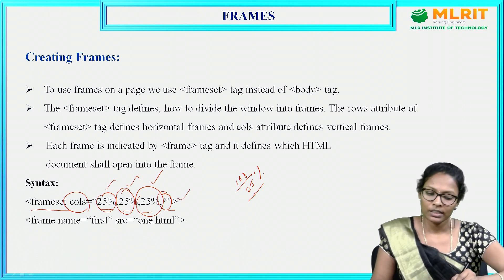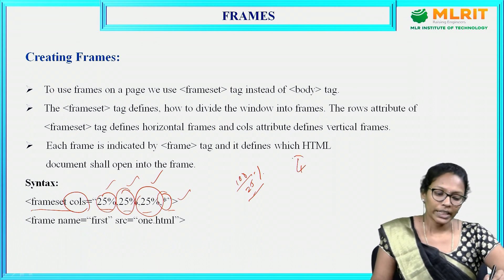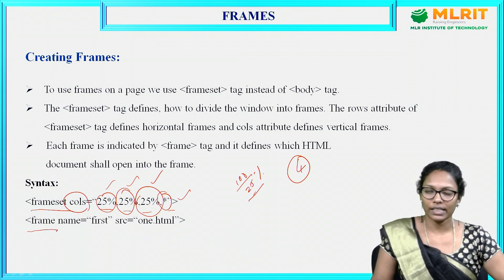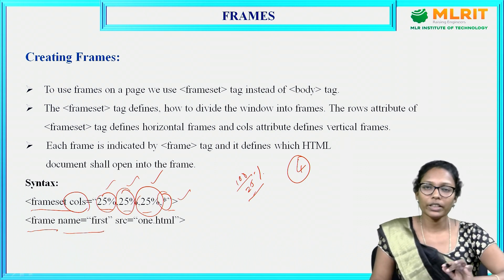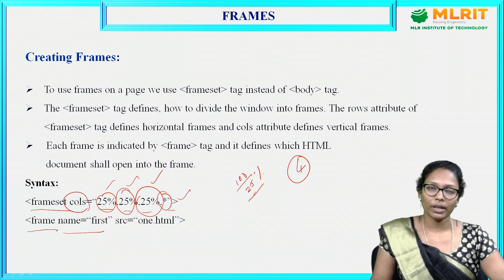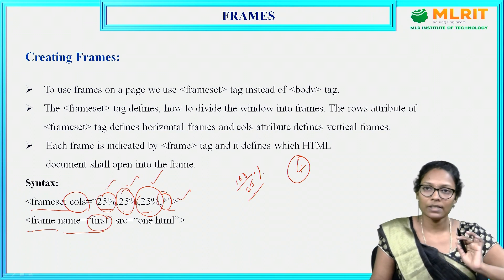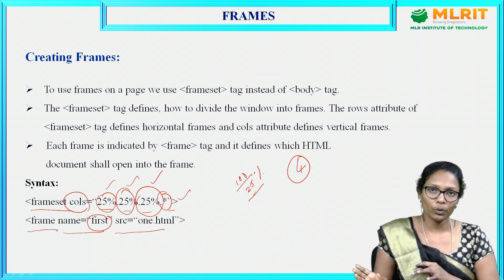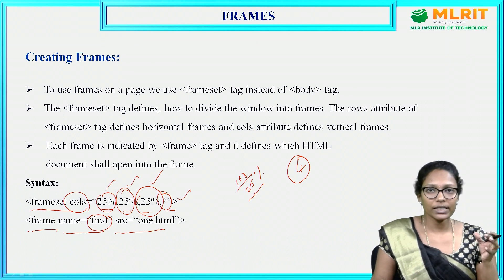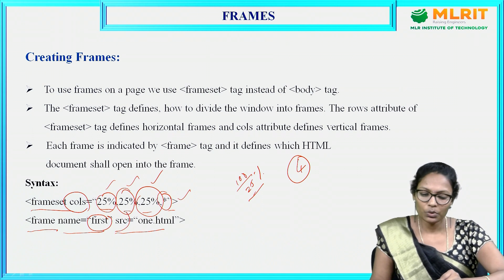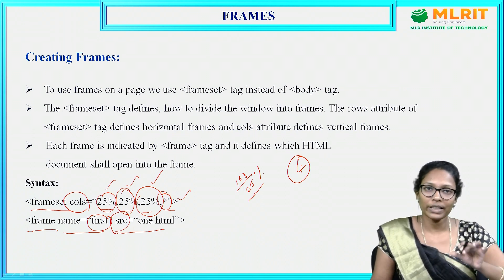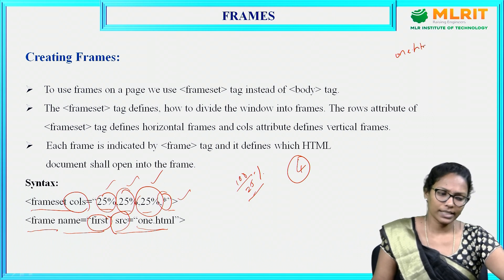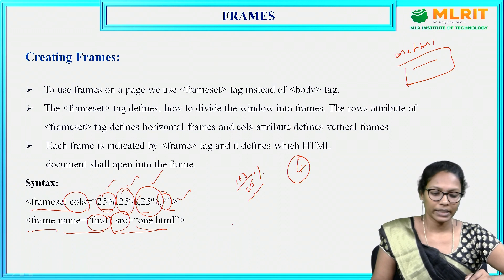Once the page is divided into four columns, you need to insert four frames. For each frame, use the frame tag with a name attribute — for example, 'first frame' — just for your understanding. The src attribute specifies what to display in that frame: you can reference an existing HTML program such as 1.html. The content of 1.html will be displayed in that frame.